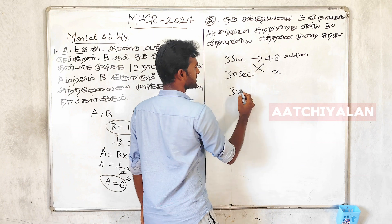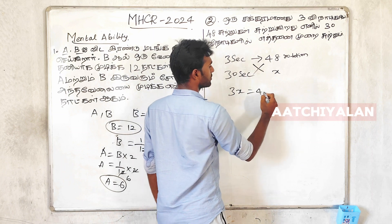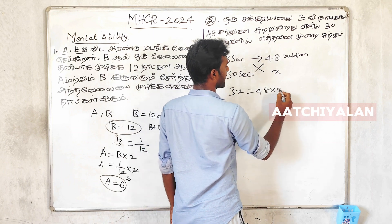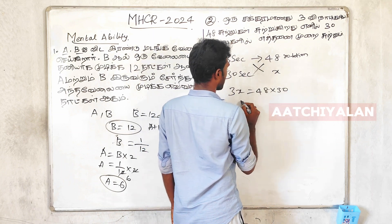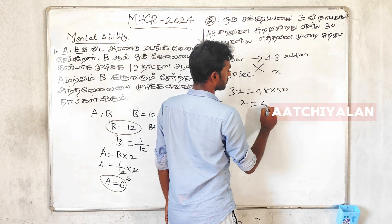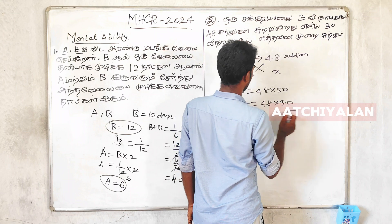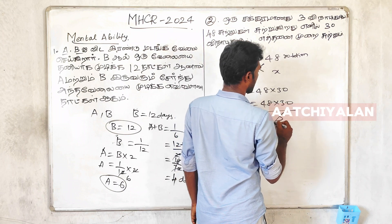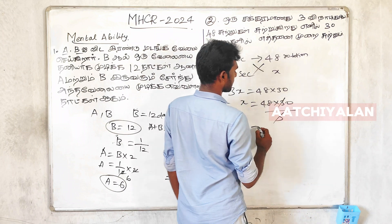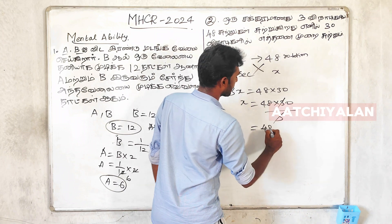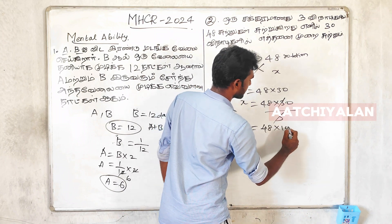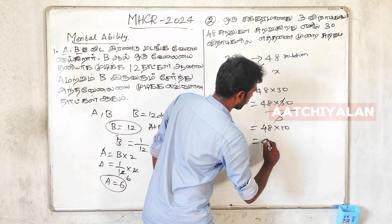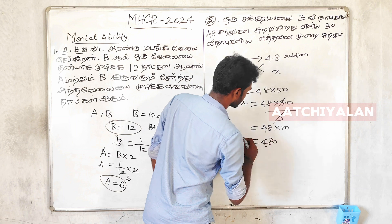x is equal to 48 into 30 by 3. If we add it, we can cancel. 48 into 10 is 480 rotations.